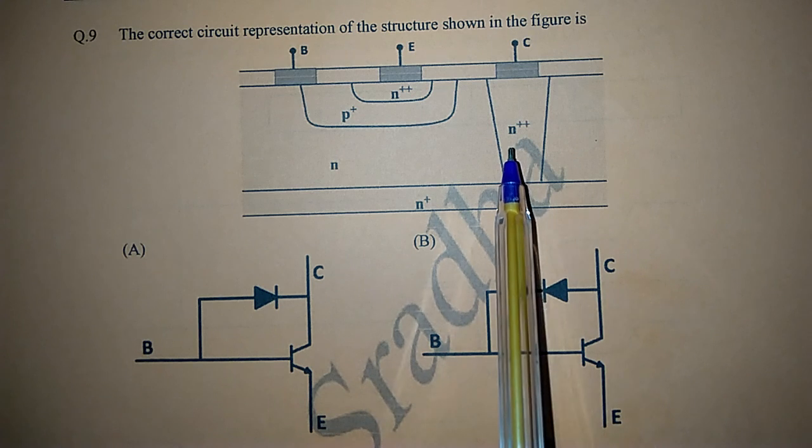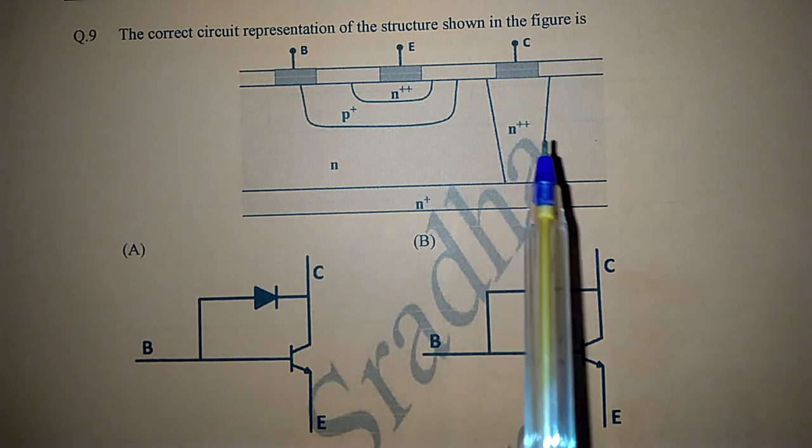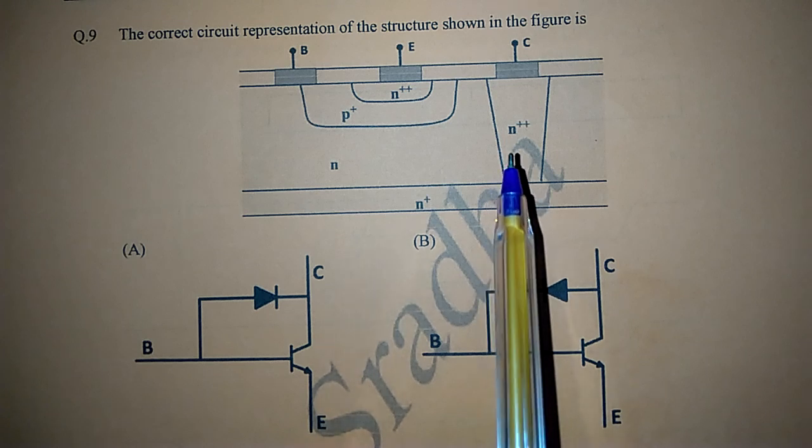N+++ is there, that means heavily doped N-type material. So that means N-type material has to connect to the ordinary collector of BJT.